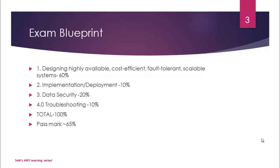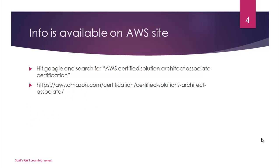Then we have troubleshooting, which gets you 10 percent, making the total 100 percent. As for the pass mark, there is no official statement on the pass percentage, but we believe it is somewhere around 60 or 65 percent. Aim for 70 or 75 percent though, guys. This info is available on the AWS website.